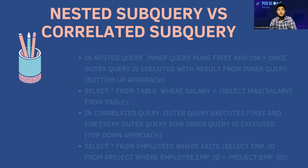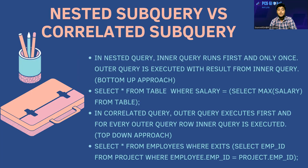The next question is: what is the difference between a nested subquery and a correlated subquery? In a nested subquery, the inner query runs first and only once, and then the outer query is executed with the result from the inner query — this is a bottom-up approach. The syntax looks like: SELECT * FROM table WHERE salary = (SELECT MAX(salary) FROM table).